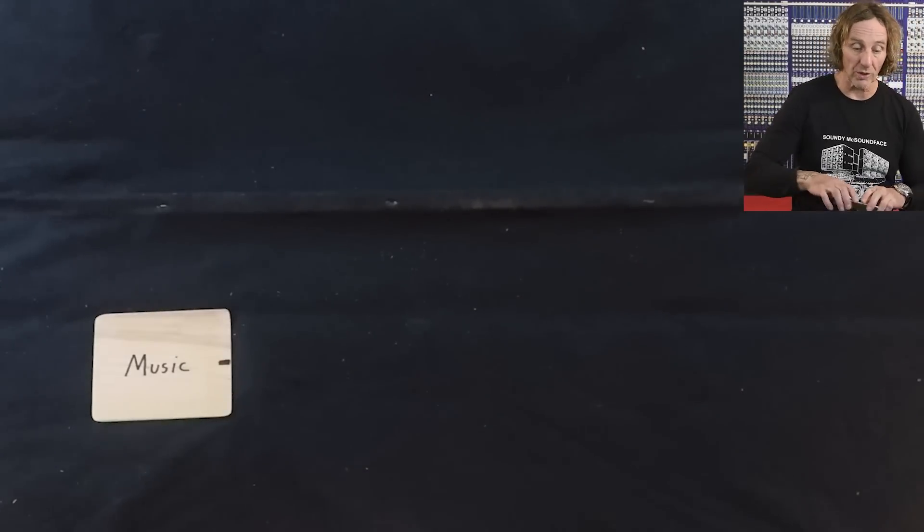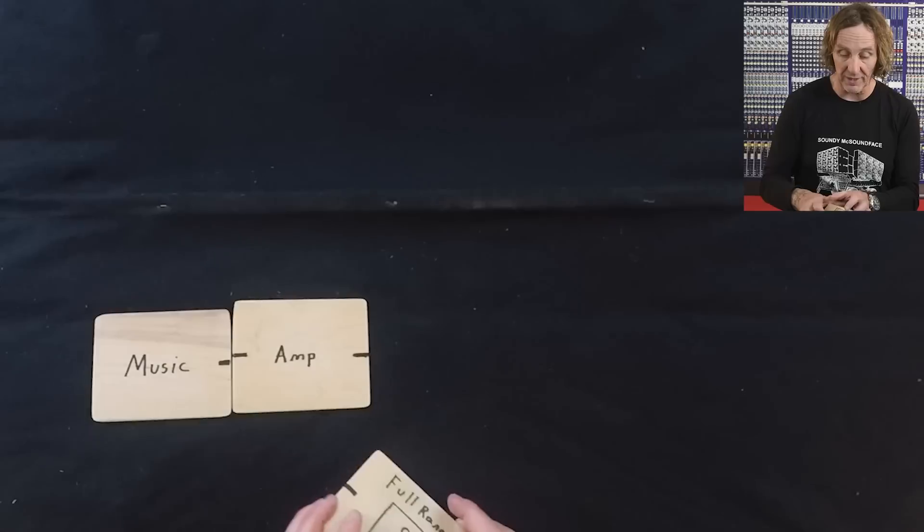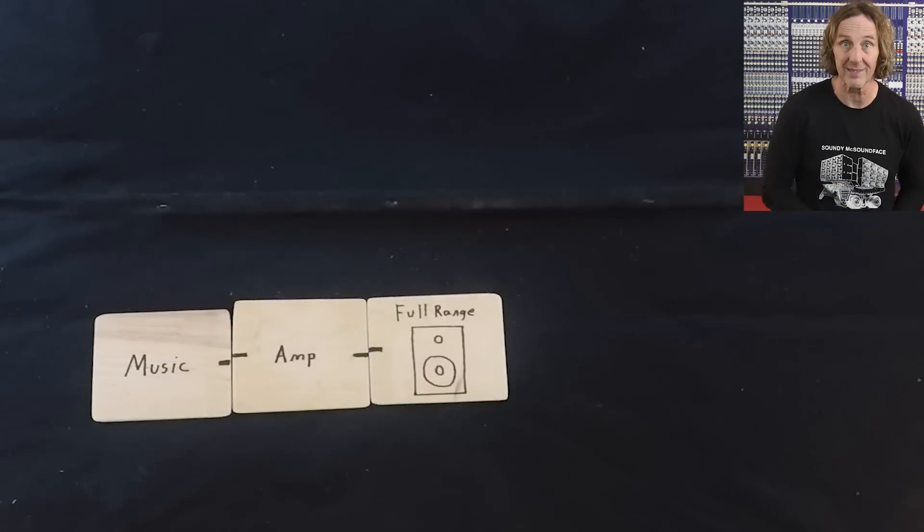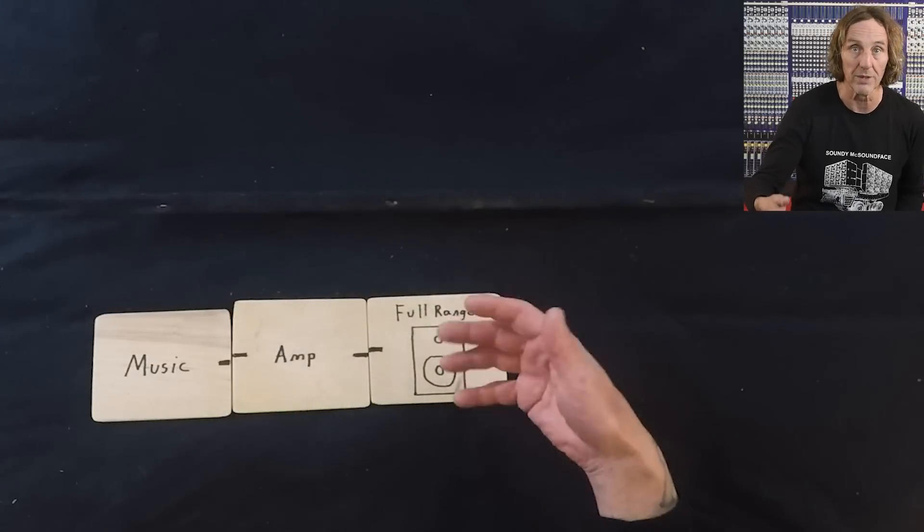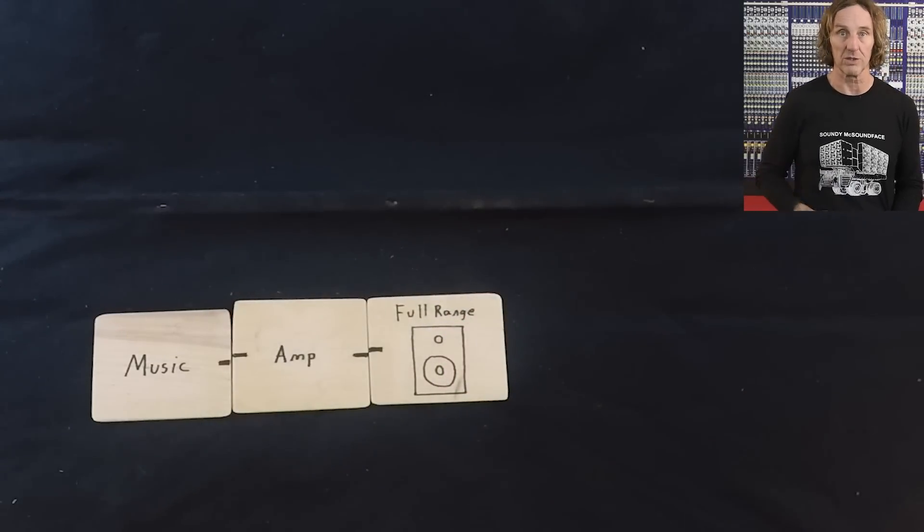Out of that music source, we're going to run into an amp. And out of that amp, we're going to run into a full range speaker. That could be a single speaker, it could be multi speakers, it could be a woofer, a tweeter, woofer, mid-range and tweeter, or a bunch of speakers in there.